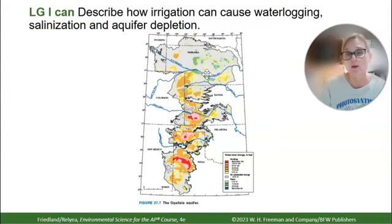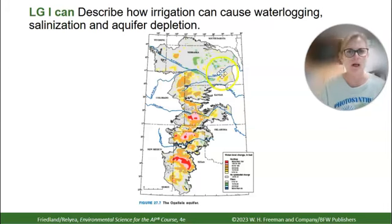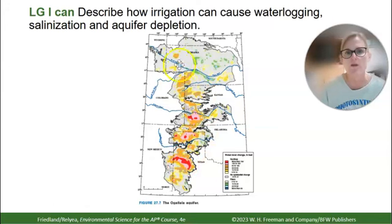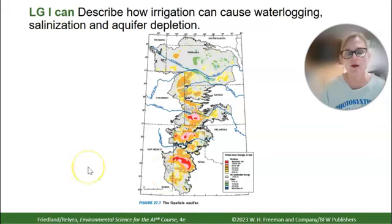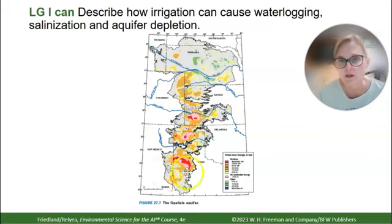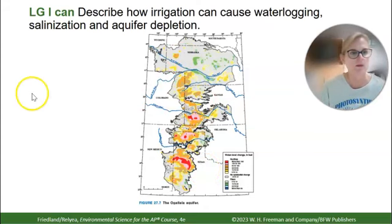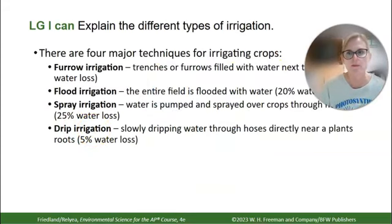The Ogallala Aquifer is the largest aquifer in the United States, covering parts of Nebraska, Kansas, Colorado, and New Mexico. Since irrigation was invented, there has been massive depletion of this aquifer, and the picture here shows the various problems associated with that process.